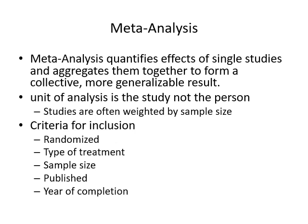If we're only using published articles, that introduces a built-in bias. Published articles are mostly ones that find significant effects. For our meta-analysis to be trustable, an effort needs to be made to find non-published articles, which are becoming easier to locate as theses and dissertations are becoming more searchable through various search engines.